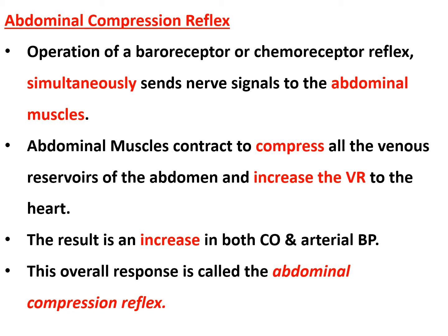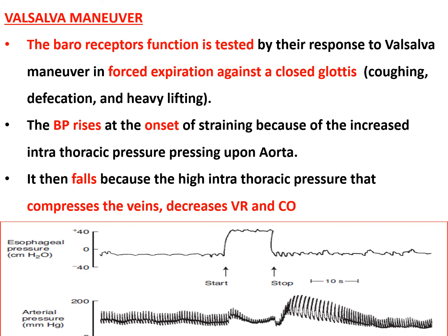This overall response is called the abdominal compression reflex. When the baroreceptor or chemoreceptor reflex operates, the abdominal muscles are stimulated via the vasomotor center to compress the venous reservoirs and raise cardiac output and blood pressure.